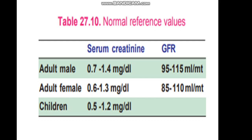Clearance of the substance. The formula of creatinine clearance, urea clearance, or any one is: milligrams of substance excreted per minute divided by milligrams of substance per ml of plasma. That is excretion in the urine divided by the value in the plasma. The formula comes to be: C, meaning clearance in ml per minute, is equal to U times V divided by P, where U is the concentration of